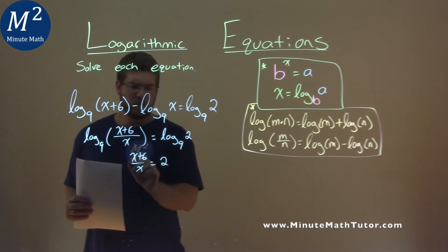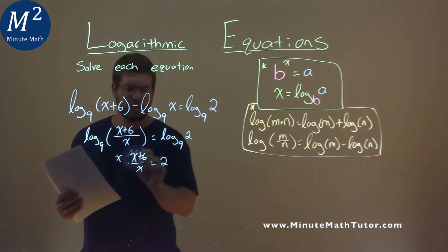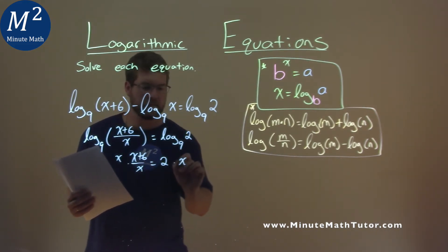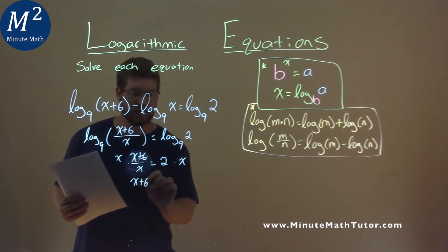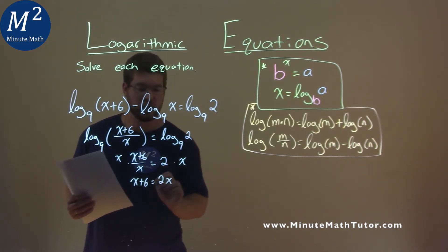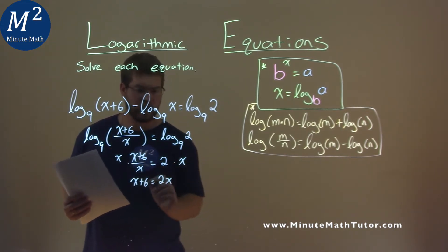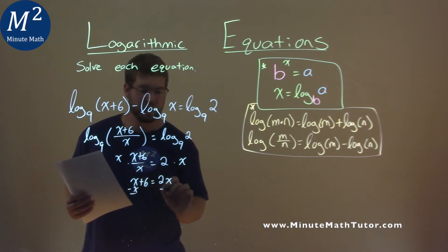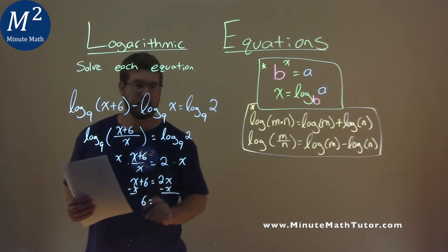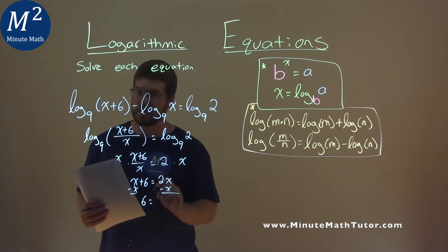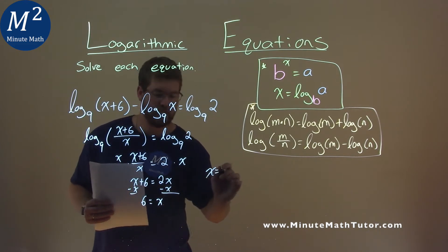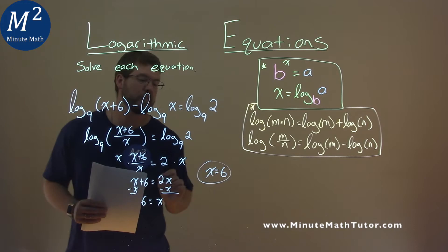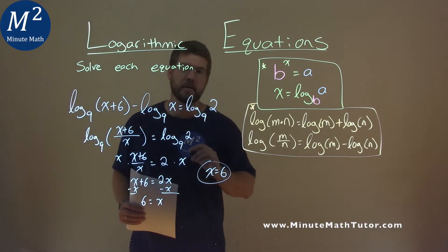To solve this, multiply both sides by x, and so I have x plus 6 equals 2x. Let's combine our like terms. I'm going to subtract x from both sides, and I have positive 6, and 2x minus 1x is just x. And so my final answer here is x equals 6.